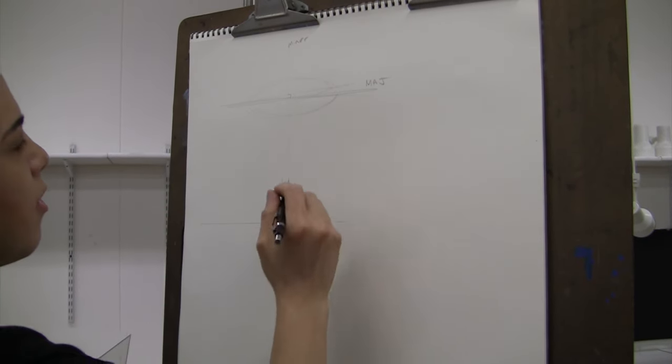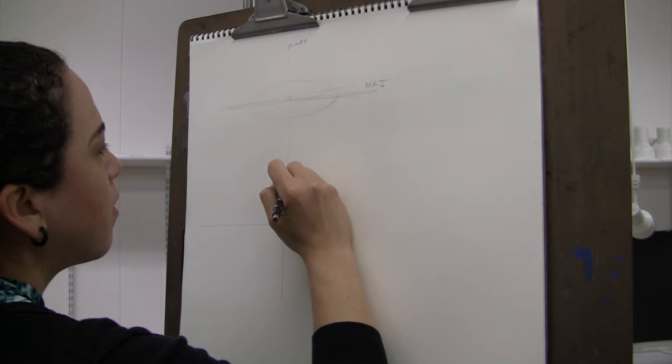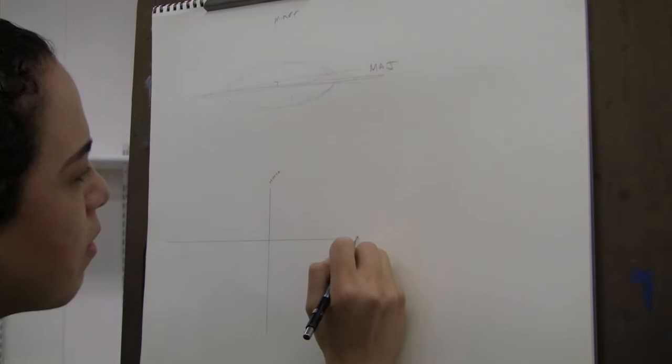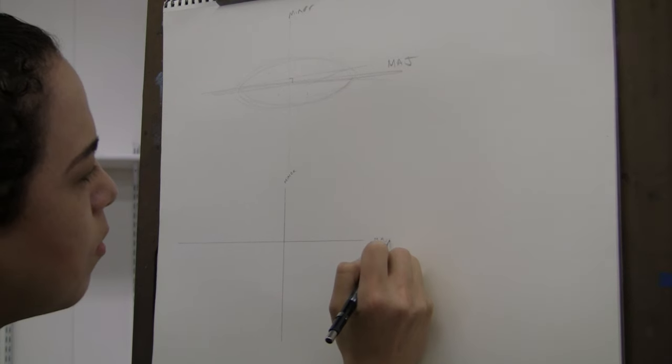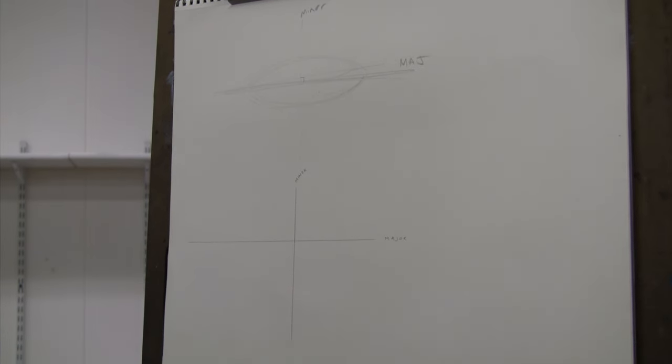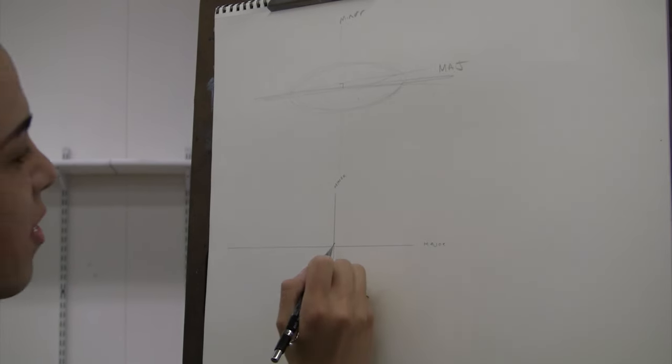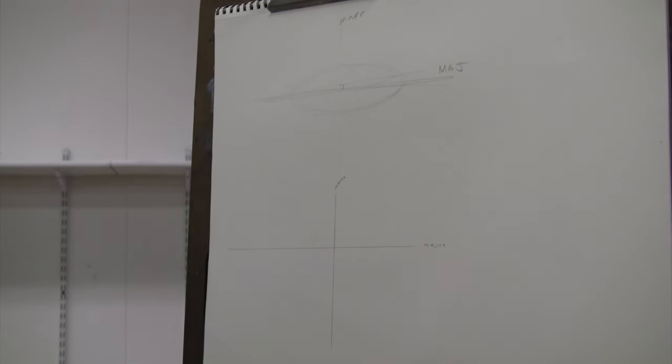So now we have our minor, and we have our major. And at this point, it's important to step back and say, what does it look like? Does it actually look like this is the right angle, or do you need to do it again?